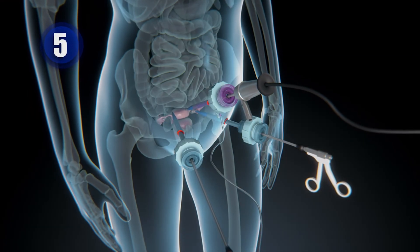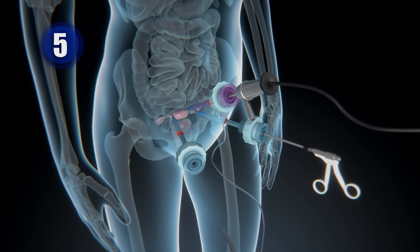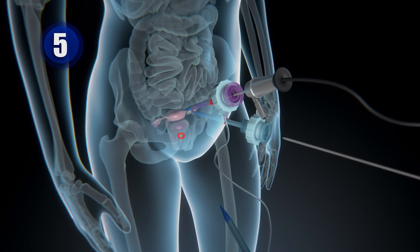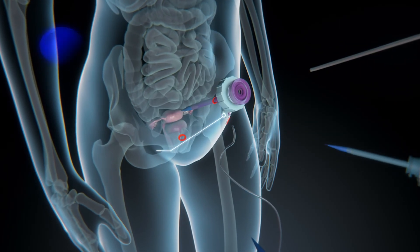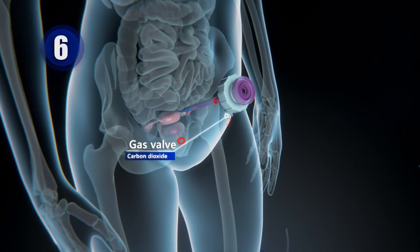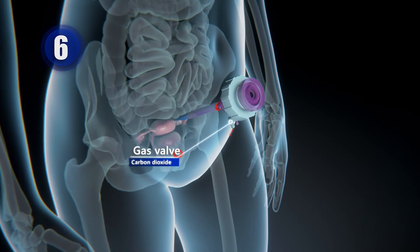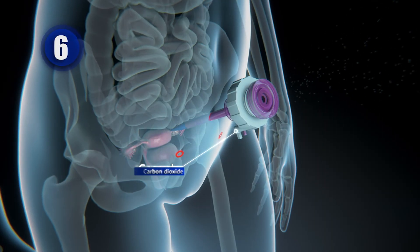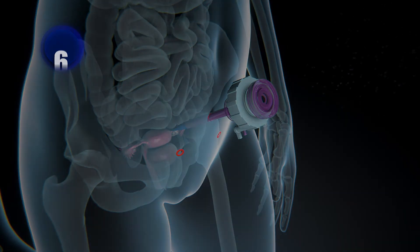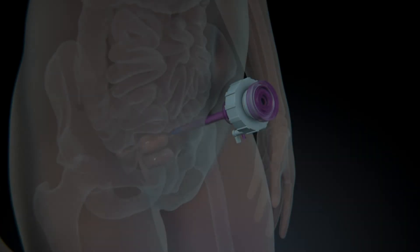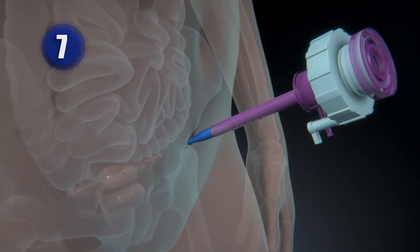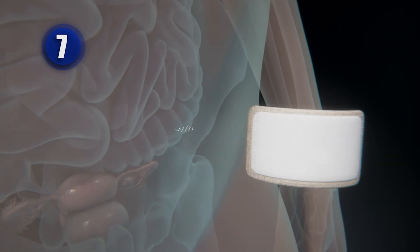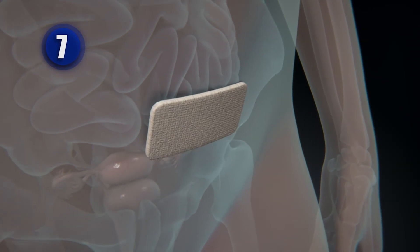A specific gas valve is left in place after removal of the laparoscope and other surgical tools to allow the entire amount of carbon dioxide to escape from the abdomen. The keyhole incisions are then closed with stitches or staples and bandaged.